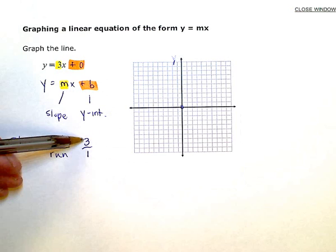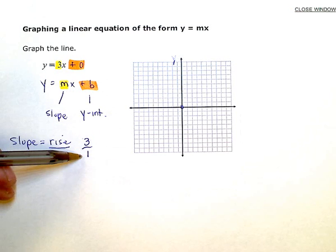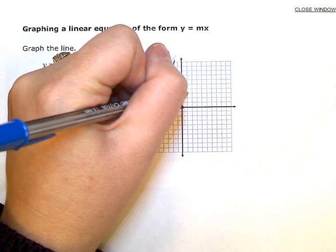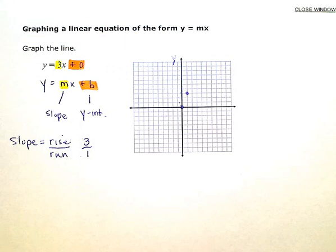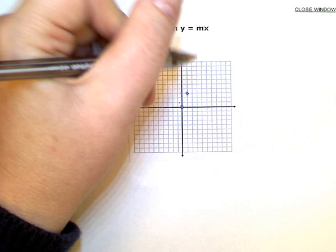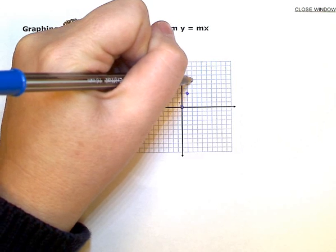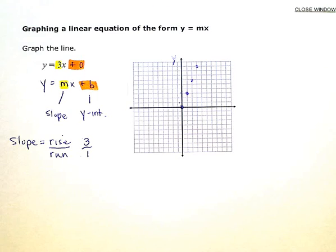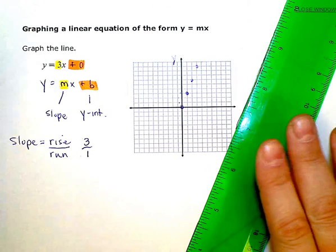So I'm going to go up 3 over 1 to the right. So up 3, 1, 2, 3, over 1 to the right. Puts another point right there. And I can do this a few times, 1, 2, up 3, over 1, up 3, over 1. As many times as I want to to kind of get a few dots filled in there.